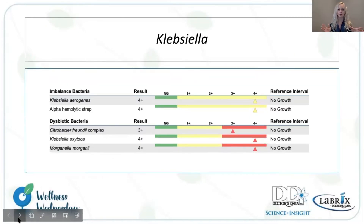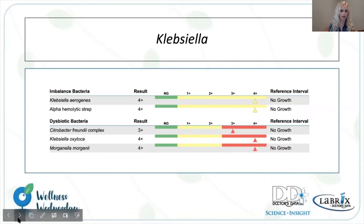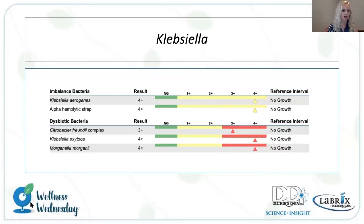Here we have an example of a cultured stool result with Klebsiella. Klebsiella is the bacteria associated with dysbiosis and a hospital-acquired gut via C-section. Here we see elevated Klebsiella, a little higher alpha-hemolytic strep, and some dysbiotic bacteria including Morganella and Citrobacter. So we do have dysbiotic bacteria here and some higher imbalanced bacteria.